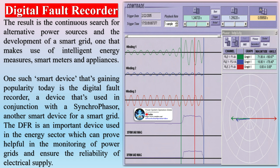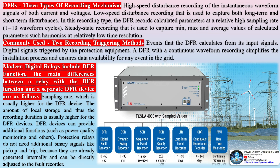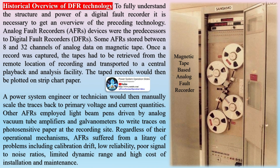DFRs have three types of recording mechanism. High-speed disturbance recording captures the instantaneous waveform signals of both current and voltages. Low-speed disturbance recording is used to capture both long-term and short-term disturbances; in this recording type, the DFR records calculated parameters at a relatively high sampling rate of 1 to 10 waveform cycles. Steady-state recording is used to capture min, max, and average values of calculated parameters such as harmonics at relatively low time resolution. Commonly used triggering methods include events that the DFR calculates from its input signals, and digital signals triggered by the protection equipment.